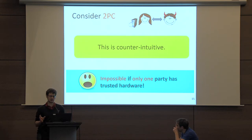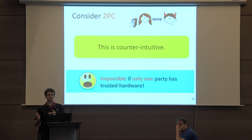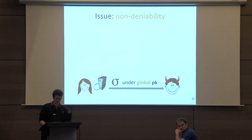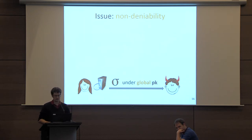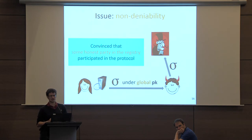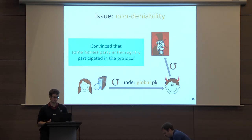This is somewhat counterintuitive. If you recall the informal picture from the beginning where a client wants to outsource computation to a server, we just considered that the server has trusted hardware and the client doesn't necessarily have to. But it turns out it's very hard to prove an ideal notion of security in this model. The most intuitive way to see the issues is through non-deniability: if in this protocol Alice was the only party with a secure processor and she uses it to compute an attestation under the globally shared key, then if the other party is malicious, it could use this attestation to convince anyone else that some honest party belonging to the registry actually participated in the protocol.